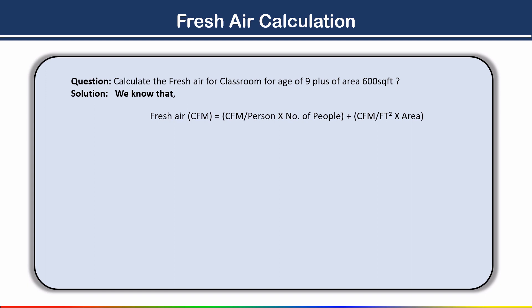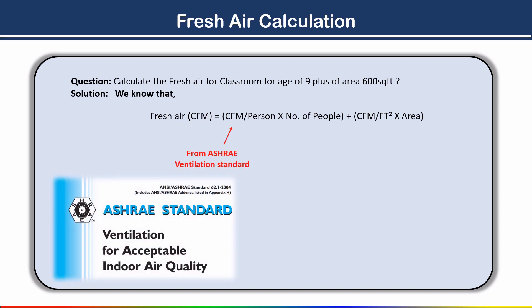The CFM per person value you get from the ASHRAE ventilation standard — I will show you the table from where we take this value. For number of people: first, check the furniture layout in the architectural drawing. If a furniture layout is given in the classroom, decide the number of people from that. Otherwise, ask the architect or interior decorator. If no detail is provided, from the ASHRAE ventilation standard you can also calculate the number of people as per area and space.